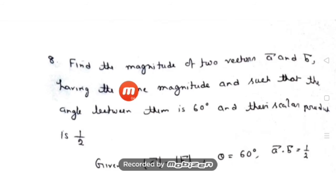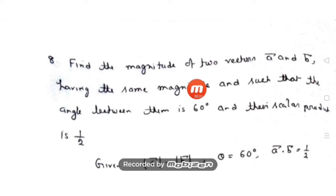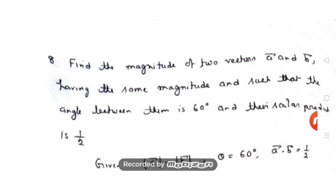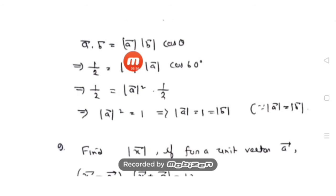Question number 8: find the magnitude of two vectors a and b having the same magnitude, such that the angle between them is 60° and their scalar product is 1/2. Our aim is to find |a| and |b|. Since they have the same magnitude, if we find one, we have both.